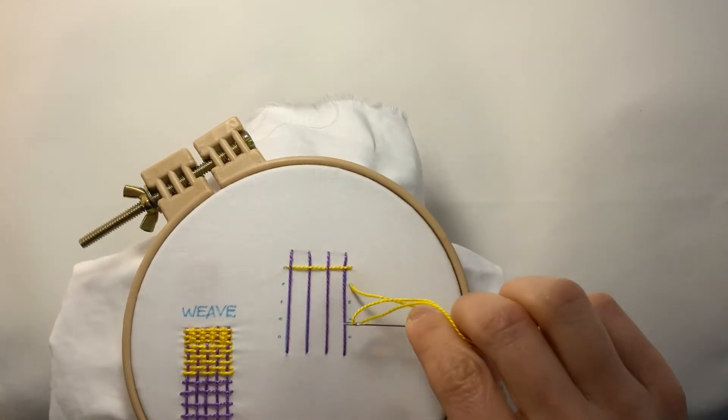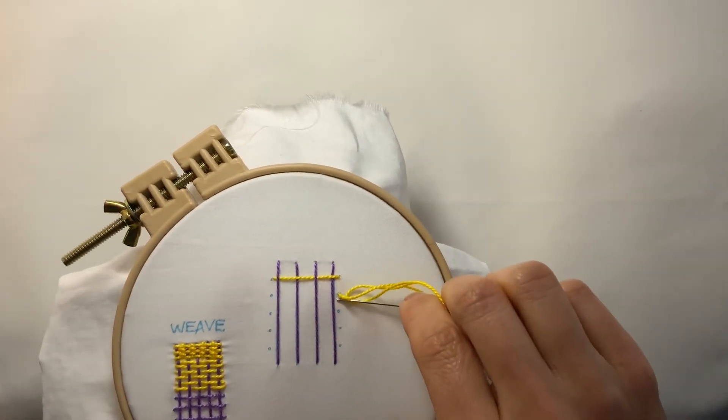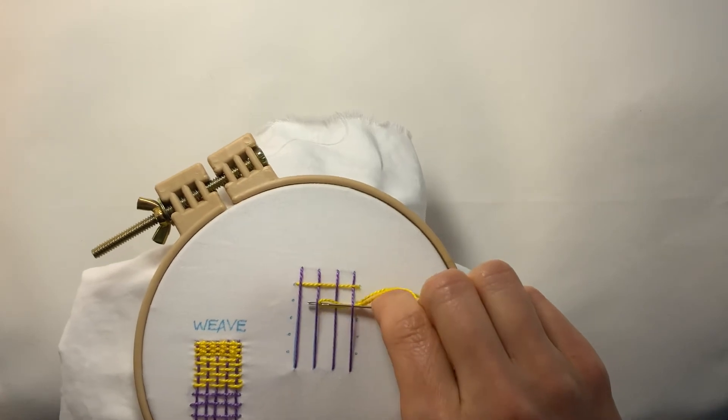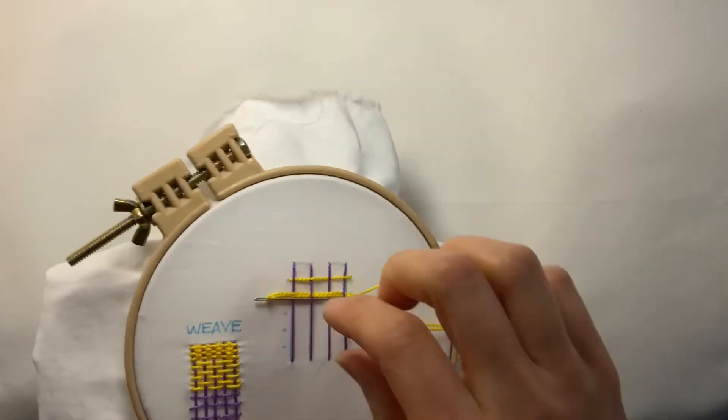So again, rotate my needle so that it's eye end first. Go under, over, under, over. So it's just the opposite.